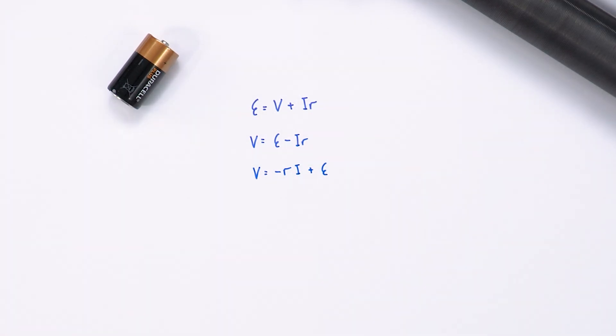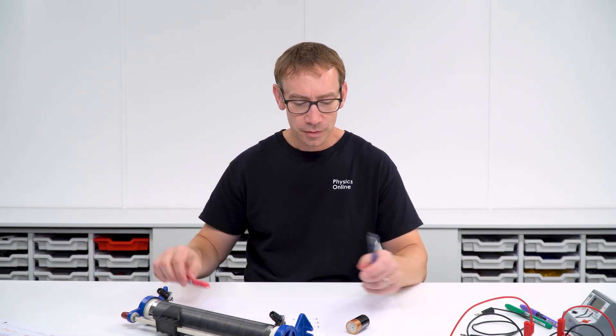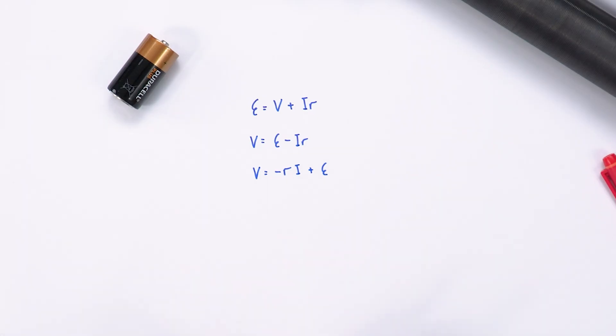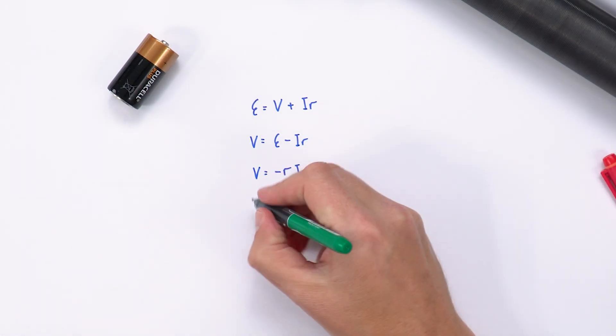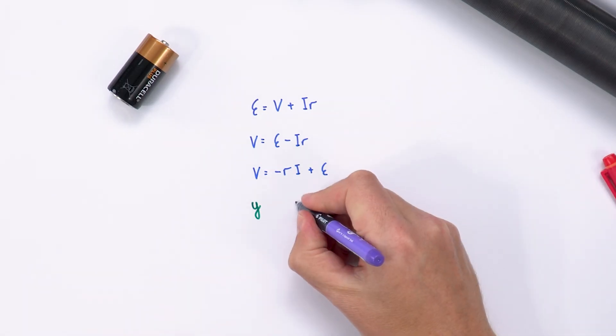Now the reason I've done that is if we take some data and we have values for the terminal PD and values for the current, we can plot them with on the y-axis we have values for V, so that's going to be on our y-axis, and on the x-axis we have values for the current.